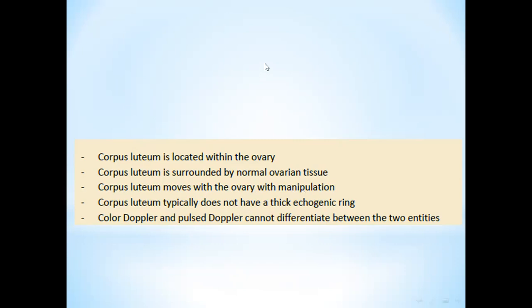Corpus luteum typically does not have a thick echogenic wall. The wall is thin, whereas in an ectopic pregnancy we see a thick echogenic wall or ring. Unfortunately, Doppler alone cannot reliably differentiate between a corpus luteum and an ectopic pregnancy.